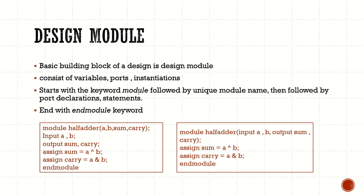The module starts with the keyword 'module' followed by a unique module name — for example, if you are designing a half adder you can name it 'half_adder' or any name of your choice. Then come the port declarations, and at the end it is closed with the keyword 'endmodule'. For a half adder example, inputs are A and B, and outputs are sum and carry.